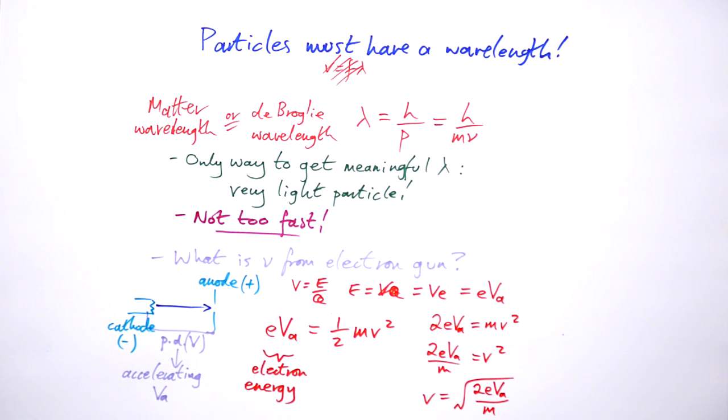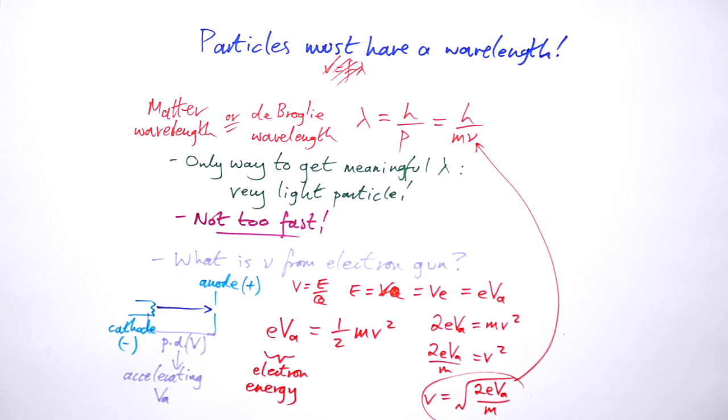Once you've got that you can pop this back into here to find out the wavelength of an electron. So that's electron diffraction and de Broglie wavelengths. I hope you found this useful. If you did please leave a like and if you think I've missed anything or have any questions please leave a comment down below and I'll see you next time.